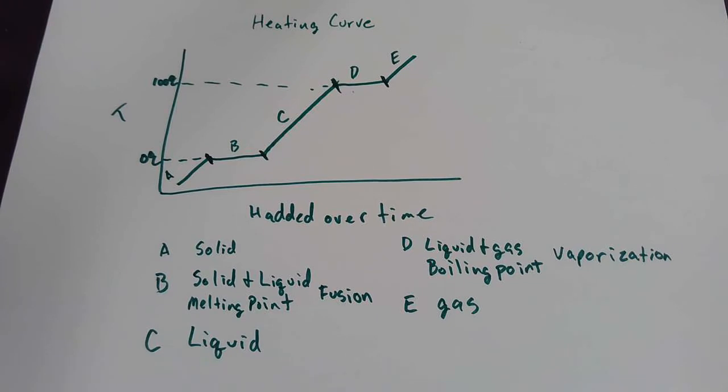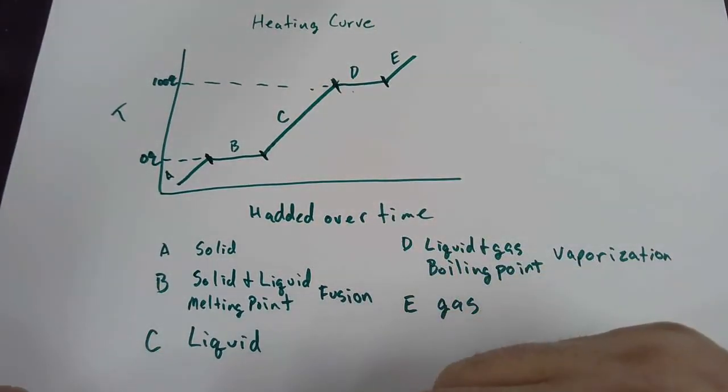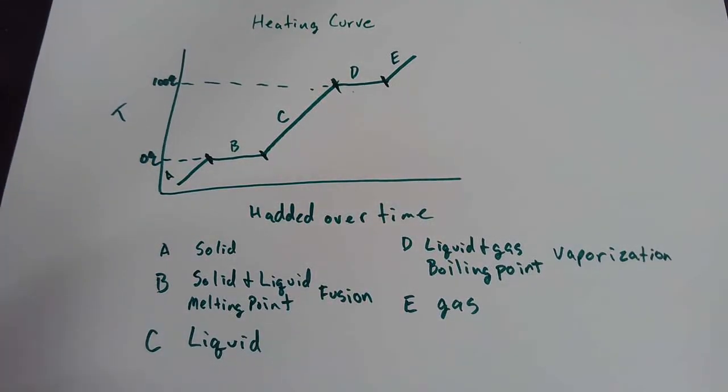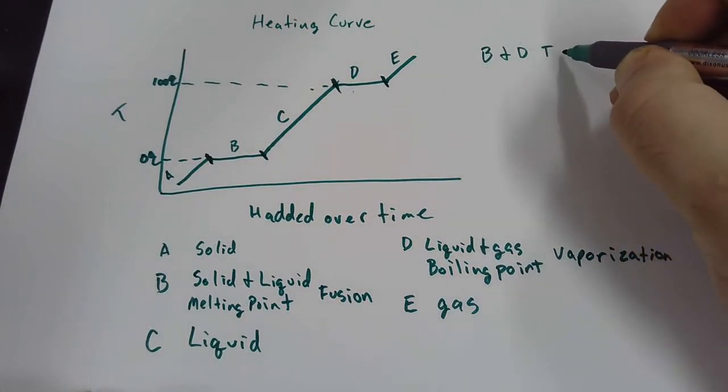There's two things happening here. What do you guys see happening along this heating curve? I have two segments where there's a transition occurring. What do we notice about those two segments? It's flat, which means it's not gaining temperature. Temperature remains constant during those phase changes. So segments B and D, temperature is constant.